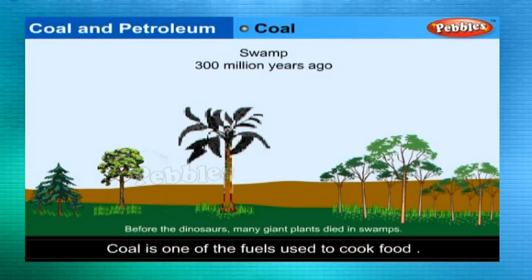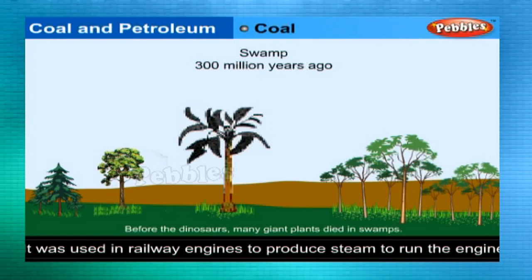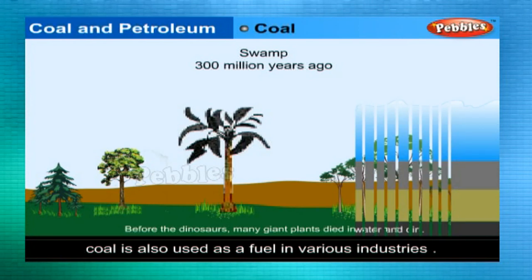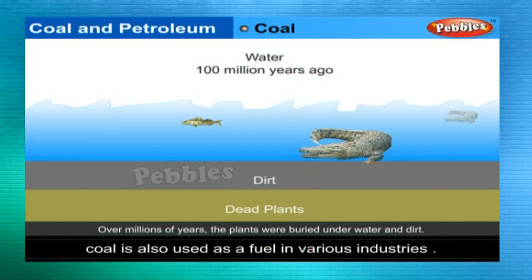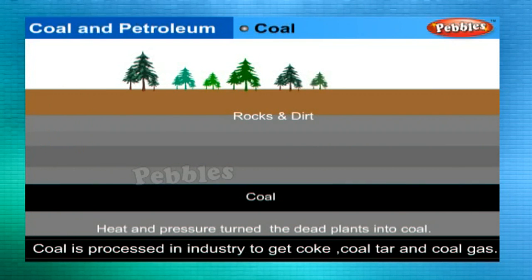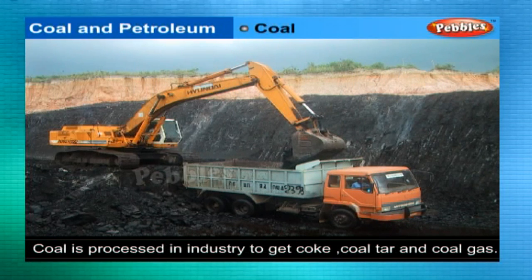Coal is one of the fuels used to cook food. Earlier, it was used in railway engines to produce steam to run the engine. It is also used in thermal power plants to produce electricity and as a fuel in various industries. When heated in air, coal burns and produces mainly carbon dioxide gas. Coal is processed in industry to get useful products such as coke, coal tar and coal gas.